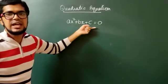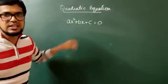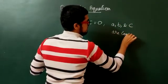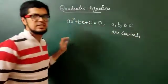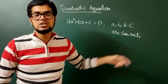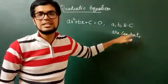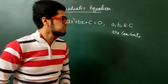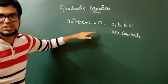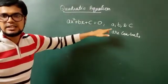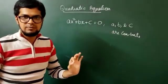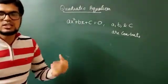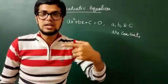Now in this, what is A, B, and C? A, B, and C are called constants — constant means it cannot be changed. These constants can take any real value; they can be any real number. Now, what is X squared and X here? X squared and X are nothing but variables. So this Quadratic Equation — AX squared plus BX plus C equals 0 — is called a Quadratic Equation in terms of variable X.